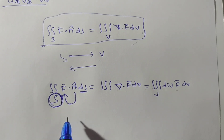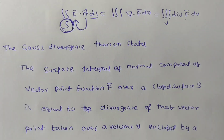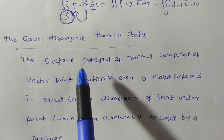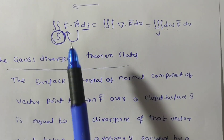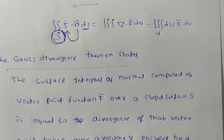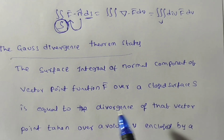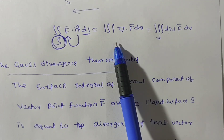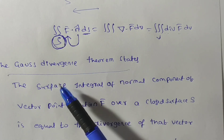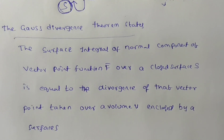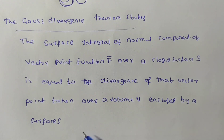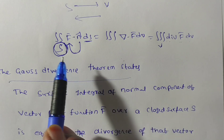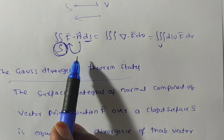This is the statement of the Gauss divergence theorem, and the formula for the Gauss divergence theorem. In the exam, if they ask you to state the Gauss divergence theorem, first write the statement and then write the formula. If you don't know the statement directly, leave four to five line spaces, write the formula first, and then write the statement based on the formula.